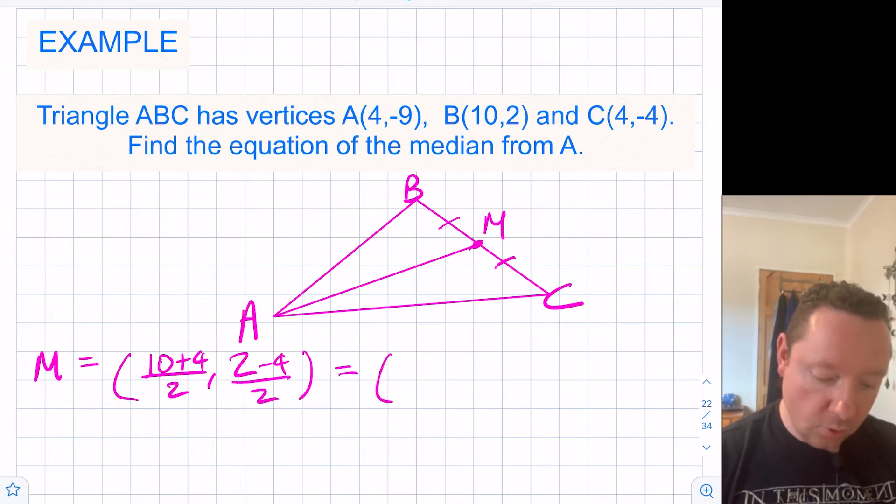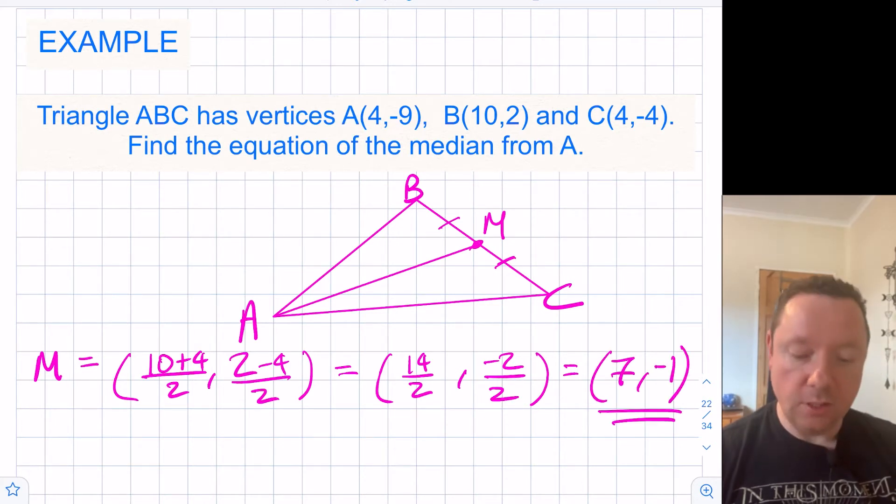10 plus 4 is 14 divided by 2. 2 minus 4 is negative 2 divided by 2. So our midpoint is just the point (7, -1). So there's our first information.